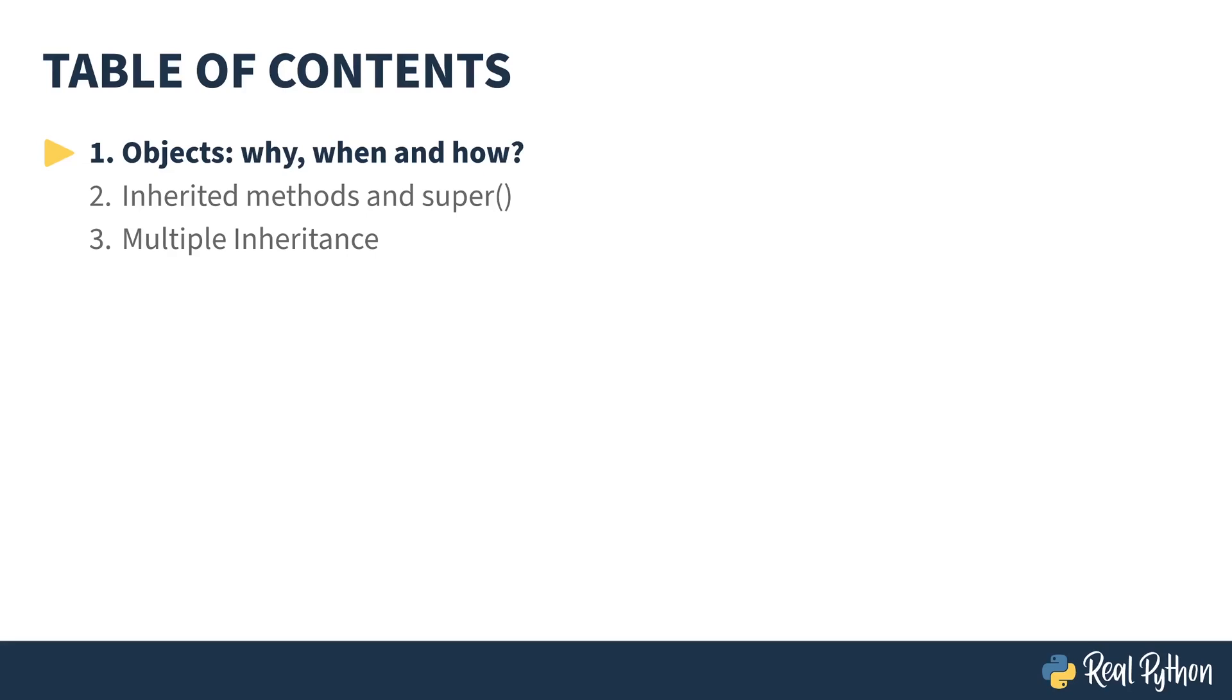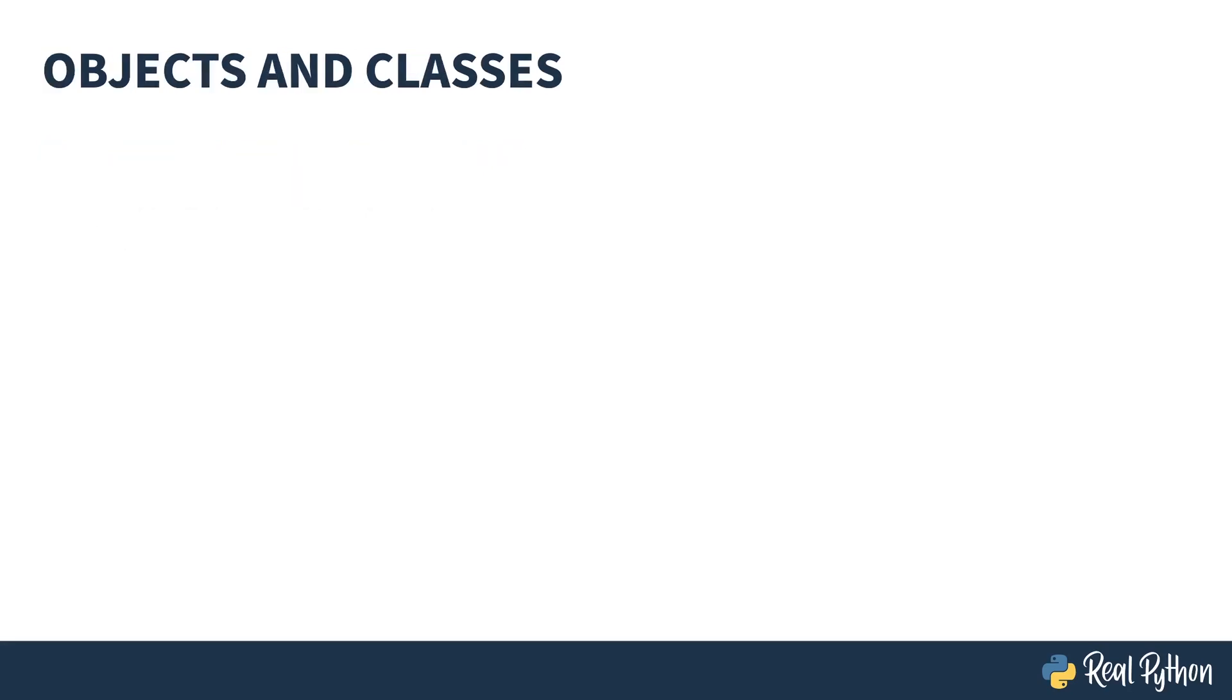In this lesson, I'll be talking about classes and objects, when to use them, why, and how. So what is an object? An object is just a way of grouping data and methods together, usually for things that belong together and help you organize your code.